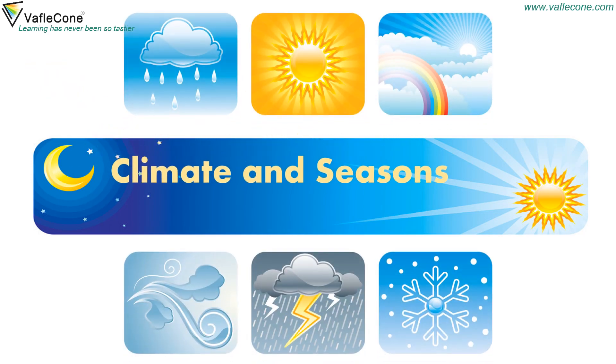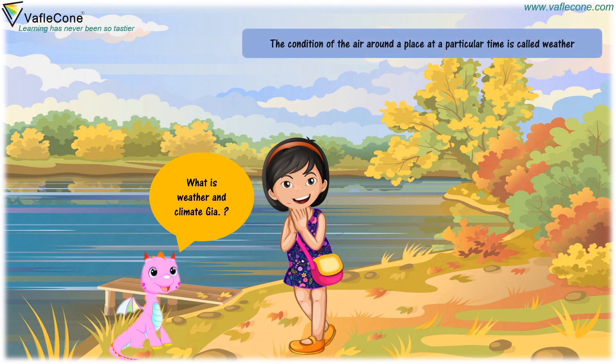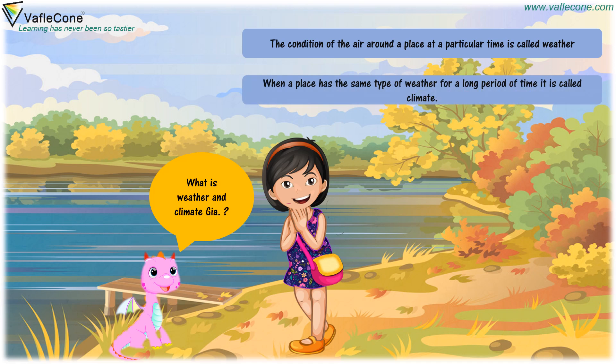Climate and Seasons. What is weather and climate? The condition of the air around a place at a particular time is called weather. When a place has the same type of weather for a long period of time, it is called climate.